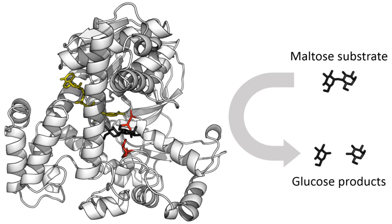Some enzymes can make their conversion of substrate to product occur many millions of times faster. An extreme example is orotidine-5-phosphate decarboxylase, which allows a reaction that would otherwise take millions of years to occur in milliseconds. Chemically, enzymes are like any catalyst and are not consumed in chemical reactions, nor do they alter the equilibrium of a reaction.